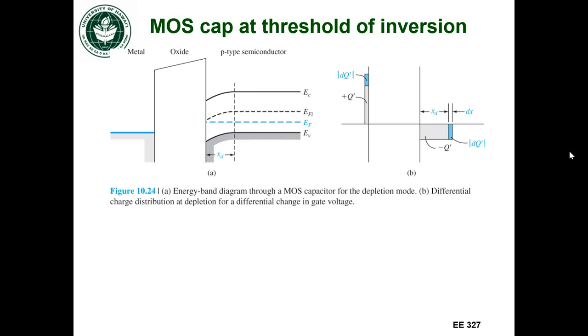If I go past depletion I can get to the threshold of inversion. That's this case. Actually we said at the threshold of inversion this is XDT. That's the maximum depletion width I'm going to get.